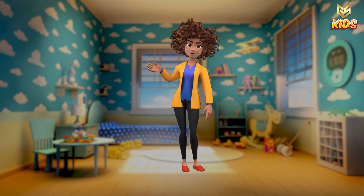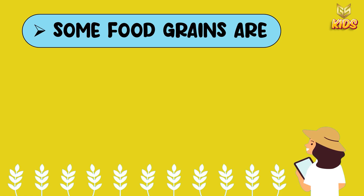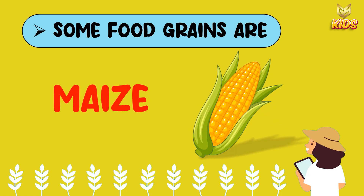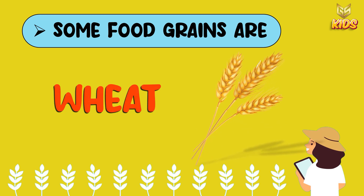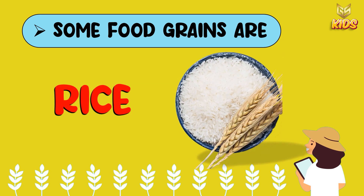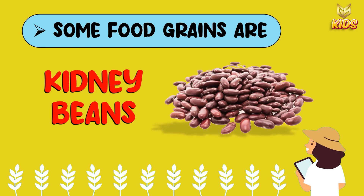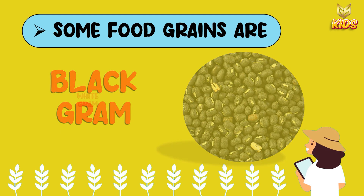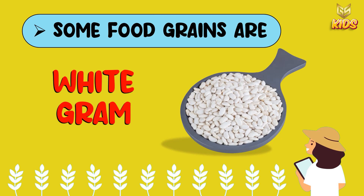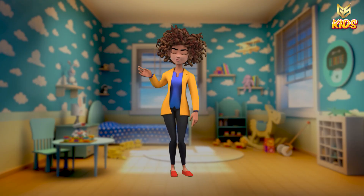Let's repeat again from the starting. What are the food grains we have learnt so far? So far we have learnt about maize, wheat, rice, kidney beans, black gram, and white gram.